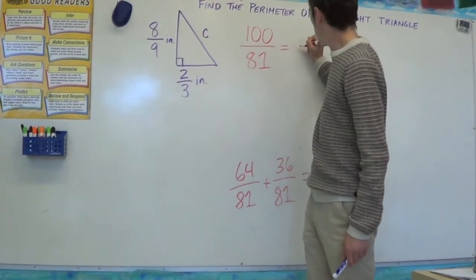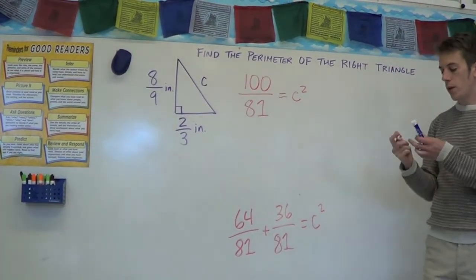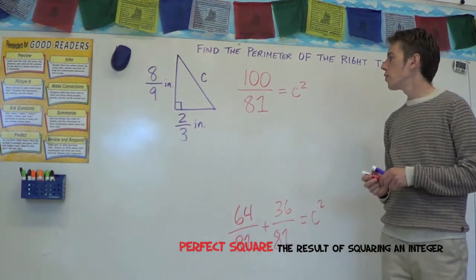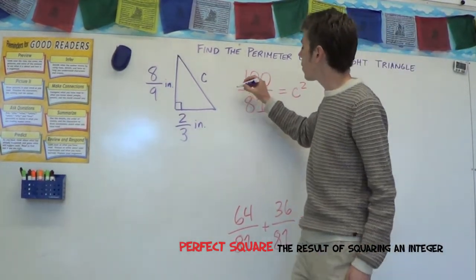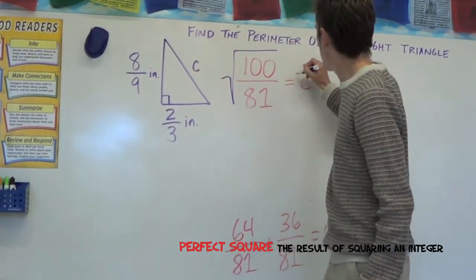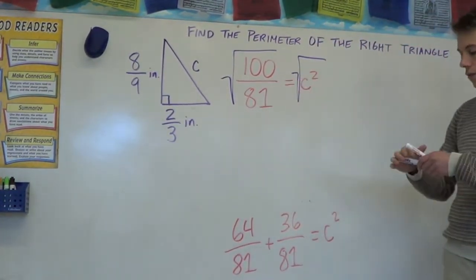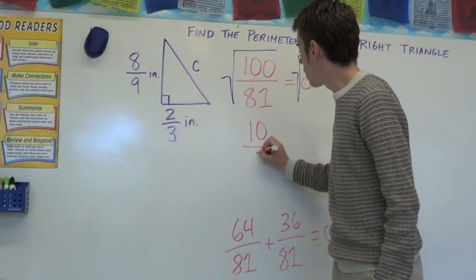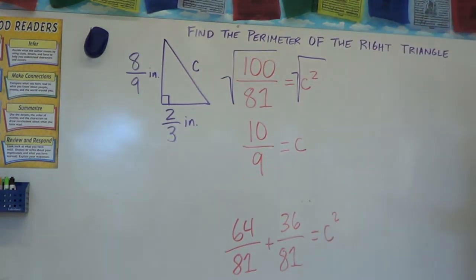Now, if these hadn't come out so nicely, this problem would be a lot harder. But these are both perfect squares. 100 is 10 squared and 81 is 9 squared. So when we take the square root of both sides to find C, this fraction is going to come out to 10 over 9. So C is 10 over 9.